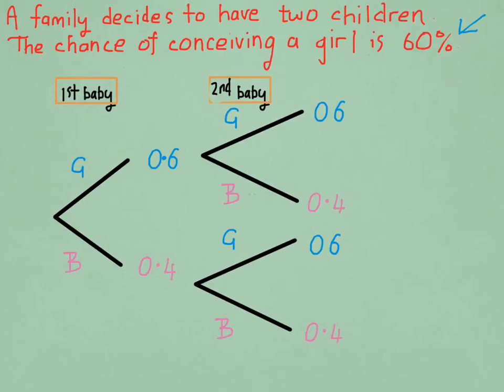Notice that as we go from the first baby to the second baby, the probabilities stay the same. That's because we are assuming that each event is equally likely to occur, or we are sampling with replacement.